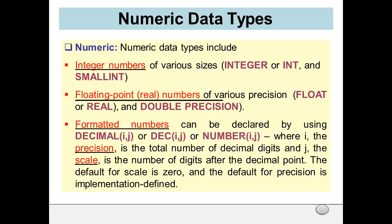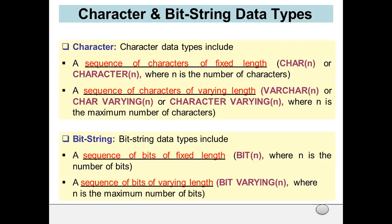Next is the character data type. Character data type includes a sequence of characters of fixed length CHAR(n) or CHARACTER(n), where n is the number of characters. Next is a sequence of characters of varying length. If it is of fixed length it is called CHARACTER, and if it is of dynamic length then it is VARCHAR(n). In this we have to mention the size of the characters.